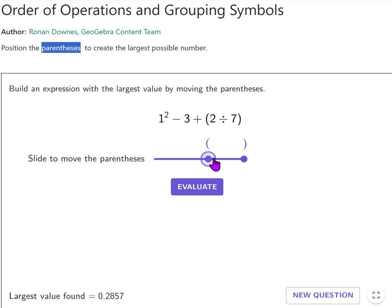So that will be 2 divided by 7. This would still be 2 divided by 7 because it's going to happen first inside the brackets.